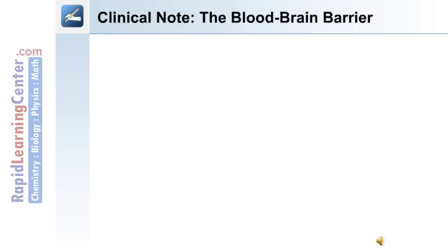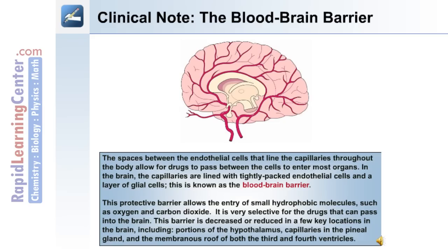The spaces between the endothelial cells lining capillaries throughout the body allow drugs to pass between cells and enter most organs. In the brain, however, the capillaries are lined with tightly packed endothelial cells and a layer of glial cells — this is known as the blood-brain barrier. This protective barrier allows entry of small, hydrophobic molecules such as oxygen and carbon dioxide, and is very selective for drugs. The barrier is reduced in a few key brain locations, including portions of the hypothalamus, capillaries in the pineal gland, and the membranous roof of the third and fourth ventricles.